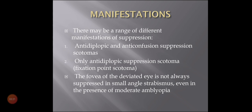There may be a range of different manifestations of suppression — anti-diplopic and anti-confusion suppression scotomas. That means it does not produce diplopia. There may be both anti-confusion and anti-diplopic suppression scotomas, or only an anti-diplopic suppression scotoma, which is the fixation point scotoma. The fovea of the deviated eye is not always suppressed in small-angle strabismus, even in the presence of moderate amblyopia.